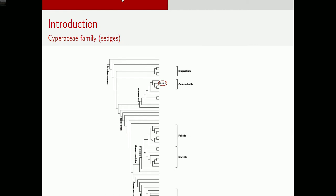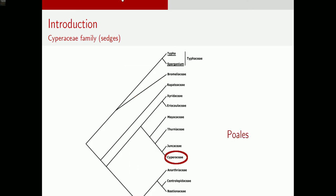Before we get into the details, here's a little phylogenetic background on the Cyperaceae. This is from the Angiosperm Phylogeny Group, showing where the Poales sit within the monocots. When we zoom into order Poales, you have several different families. One of the main families is the Poaceae — the grasses — the Restionaceae, which are really common in Southern Africa and Australia. And highlighted in red are the Cyperaceae, which is what I focus on.